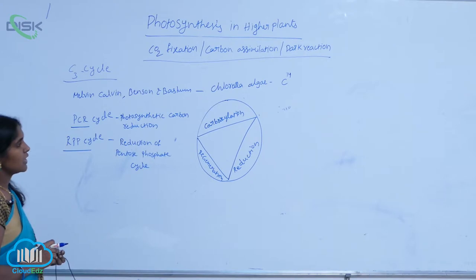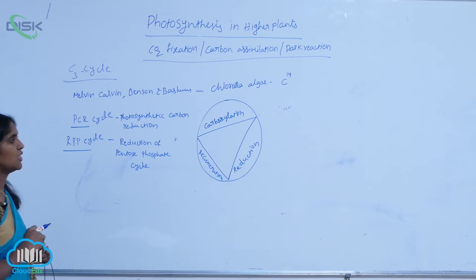In the C3 cycle, there are basically three steps: carboxylation, reduction, and regeneration.